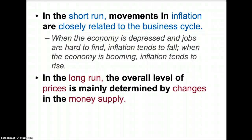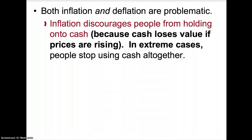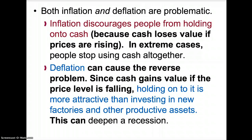In the long run, the overall level of prices is mainly determined by changes in the money supply. Both inflation and deflation are problematic. Inflation discourages people from holding onto cash because cash loses value if prices are rising; in extreme cases, people stop using cash altogether. Deflation can cause the reverse problem — since cash gains value if the price level is falling, holding onto it becomes more attractive than investing in new factories or other productive assets, which can deepen a recession.